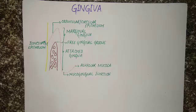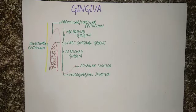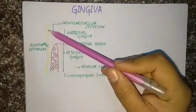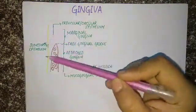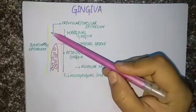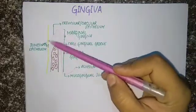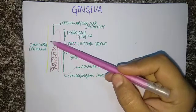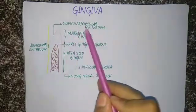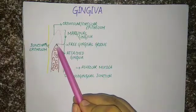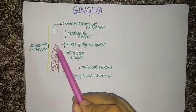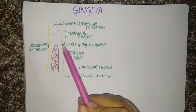Welcome back to my channel 32habiteth. Today we will be studying gingiva. This is the diagram of gingiva. First we will learn the parts. This is enamel and this is cementum. This is the gingival sulcus — this V-shaped sulcus is the gingival sulcus. The epithelium which lines the gingival sulcus is called the sulcular or crevicular epithelium. This area is alveolar bone — this is the crest.